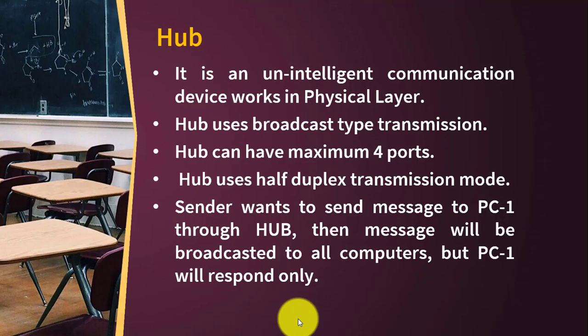So what is a hub? Hub is the opposite of switch. Switch is an intelligent device; hub is an unintelligent device. It works on the physical layer, whereas switch works on the data link layer. It uses broadcast-type messages. It has a maximum of four ports and it uses half duplex mode. In half duplex communication, you can send data, but it is two-way — one can send and the other will receive. If you are sending a message on a walkie-talkie, you say 'over' and then the other responds. If you don't say 'over,' the other cannot respond. So this is the concept of half duplex transmission mode.